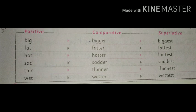To repeat: the last letter of the word is a consonant and the second-to-last is a vowel. If you see any adjective of this type, you just have to double the last letter and add ER for the comparative degree and EST for the superlative degree.